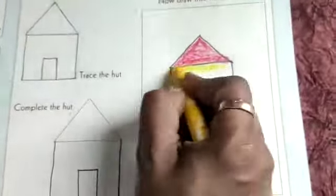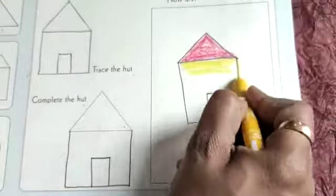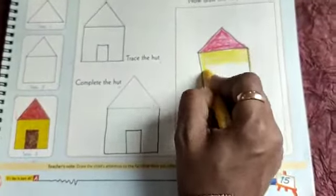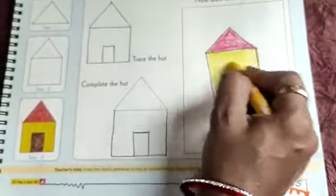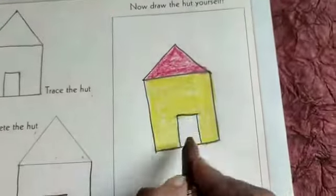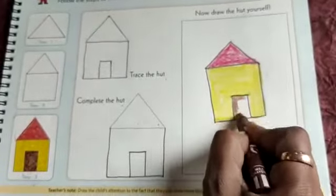Then we are coloring the house with yellow color. See children what the picture is given here. Here we are going to follow the same colors because we are completing the activity. With the brown color we are going to color the door.